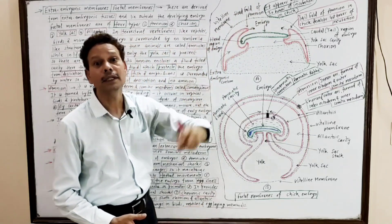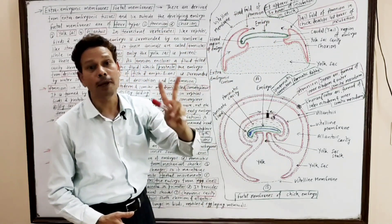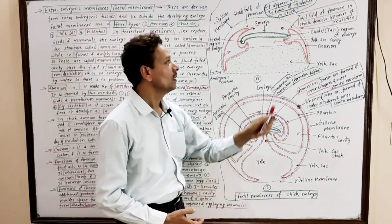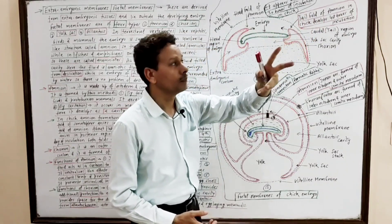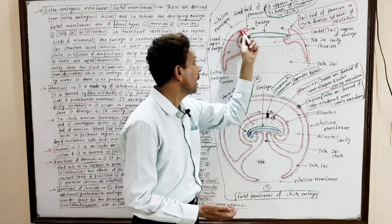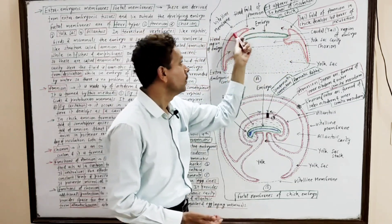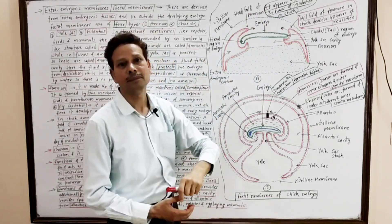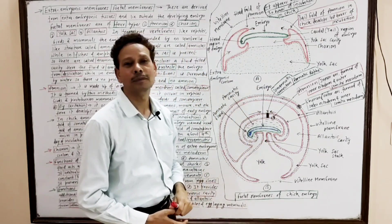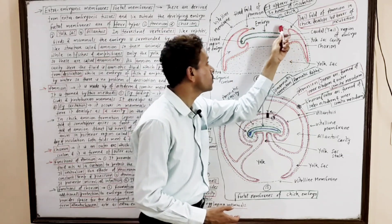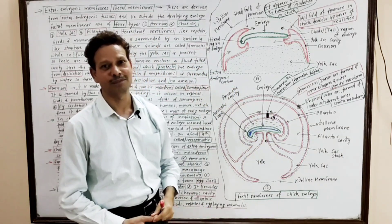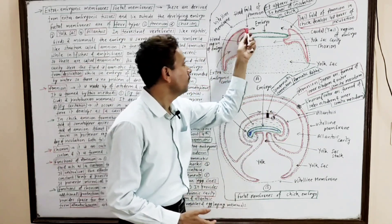In the anterior head region, a head fold of the amnion appears just after 30 hours of incubation in the chick. Similarly, in the posterior caudal region, a tail fold of the amnion appears at about 48 hours of incubation. Both the head fold and the caudal fold of the amnion move towards the center and meet almost in the middle part of the embryo.